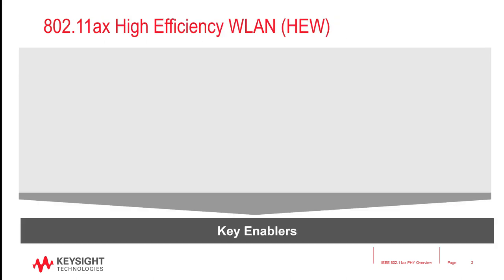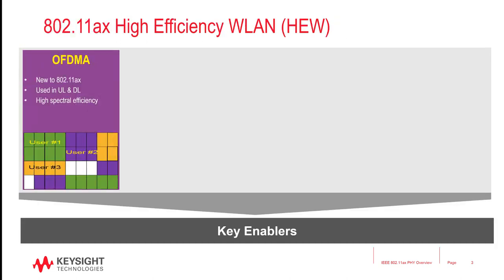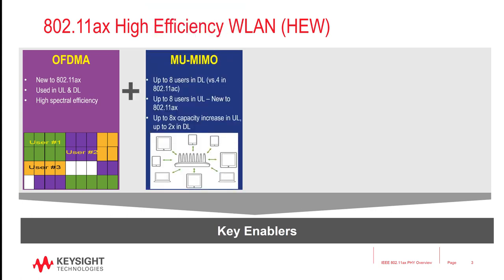Multi-user communications, such as OFDMA and multi-user MIMO, are key technology enablers for high efficiency and capacity. Though used by other wireless technologies such as LTE and upcoming 5G, 802.11ax is the first wireless LAN standard to introduce OFDMA into wireless LAN networks. OFDMA brings high-spectral efficiency, as we will see in the next couple of slides.